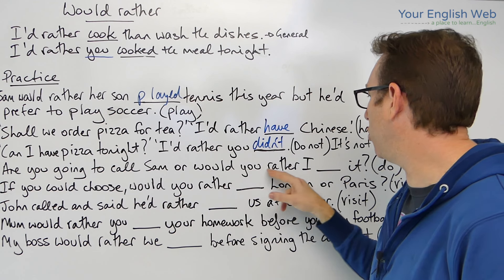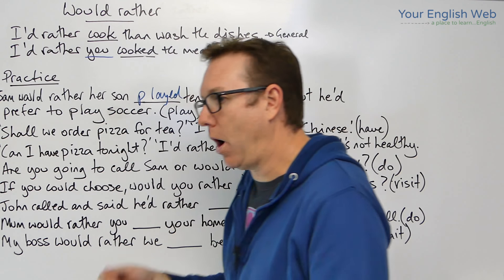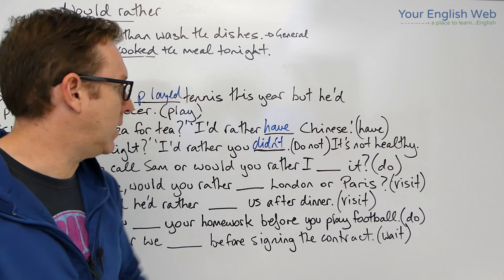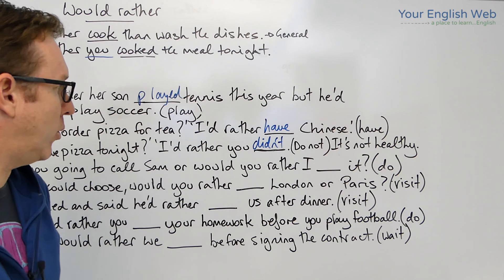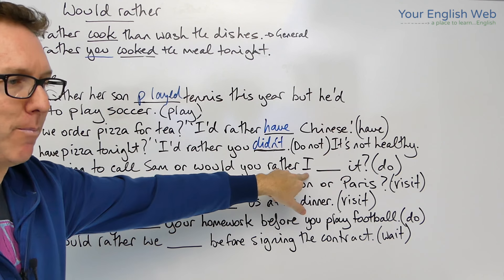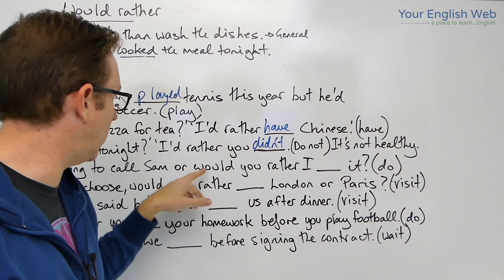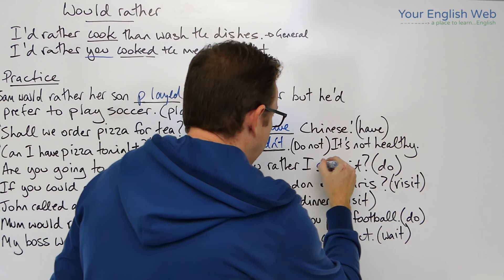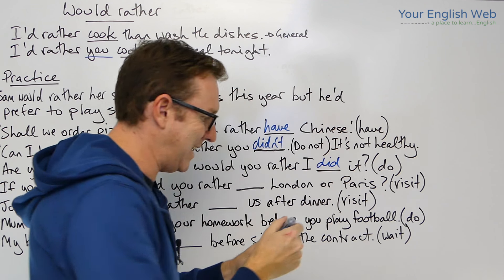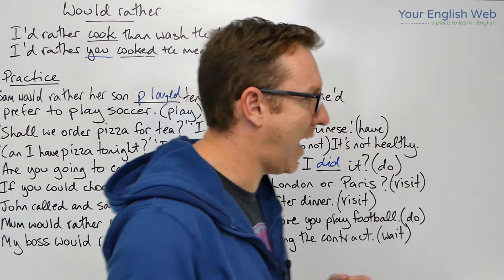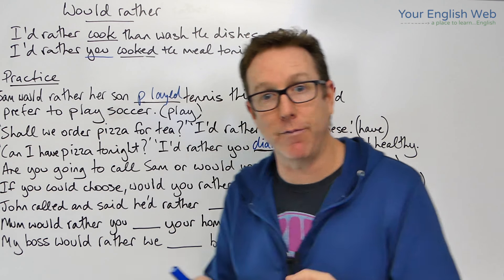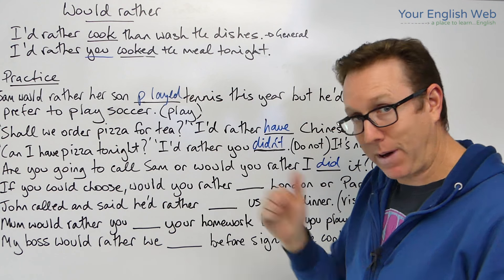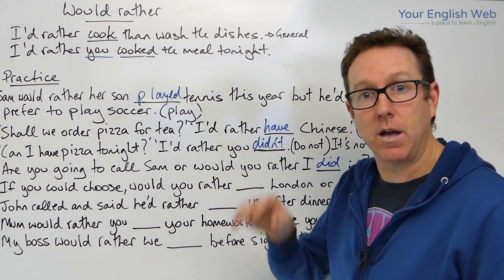'Are you going to call Sam, or would you rather I [do] it?' We need to decide: are we involving somebody else? Yes — 'I' is a second subject. So the answer is: 'Would you rather I did it?' Past tense when we involve somebody else; infinitive when there's no one else.